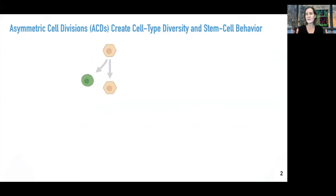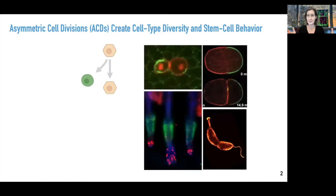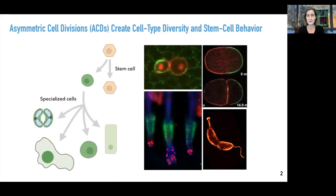What we're interested in is asymmetric cell divisions — divisions in which a mother cell divides and creates two daughters that differ. They differ in size, in their components, where they are, and eventually what they do. Asymmetric divisions are found throughout all the kingdoms of life. We find them in bacteria, plants, and animals, and in all of these cases they're really important for creating cell type diversity. In some of these cases there's also a stem cell component.